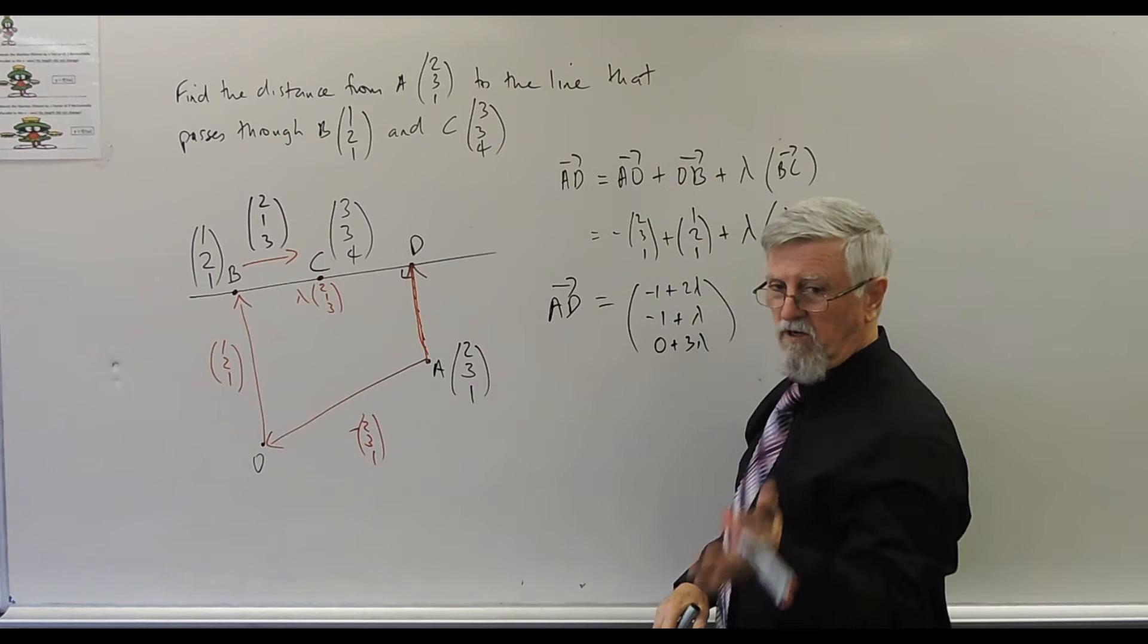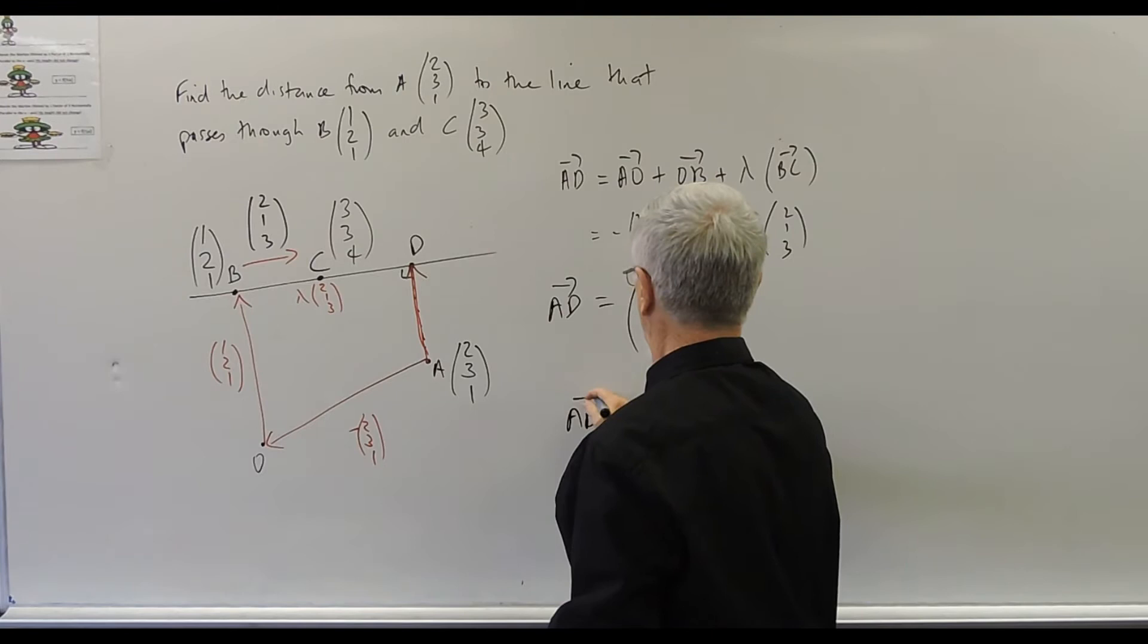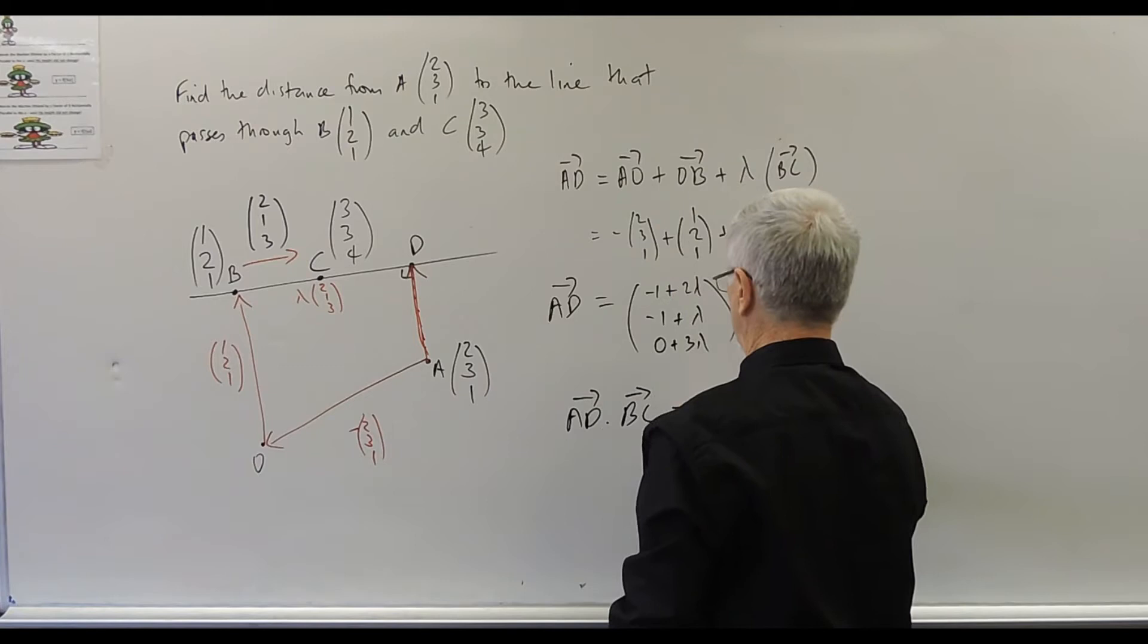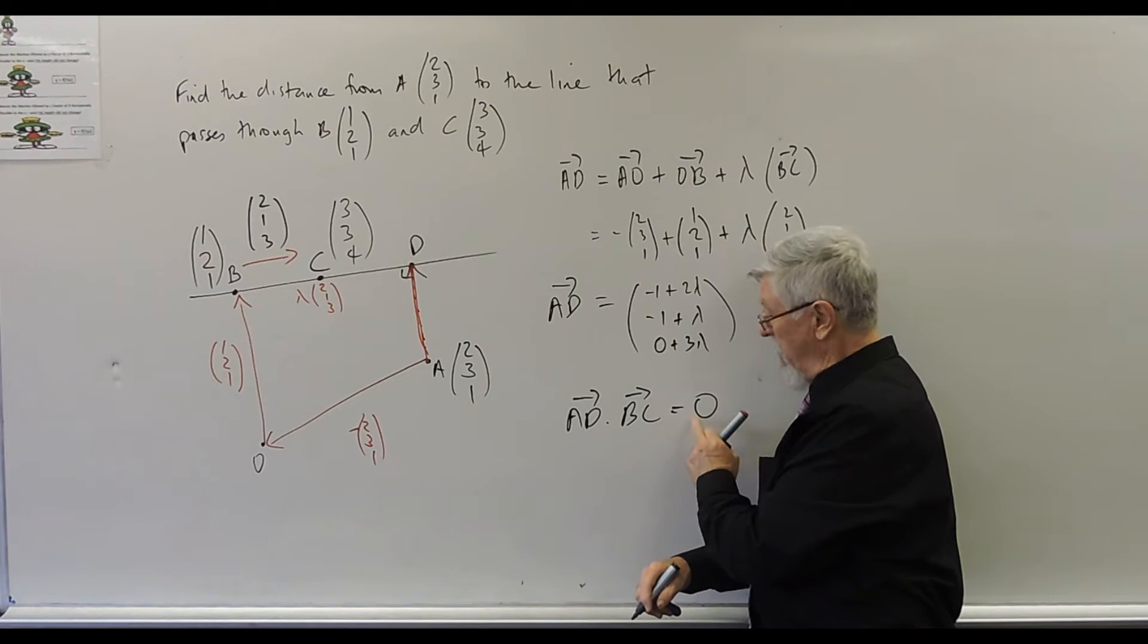Now, if I multiply AD by what? BC. Should get zero. Get zero. If they're perpendicular. So, the idea of if they're perpendicular is so only when they give you zero will we have the correct lambda. Only when we have a zero multiplied.